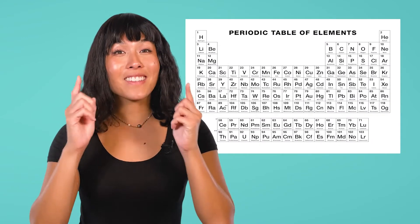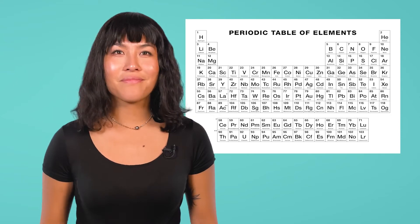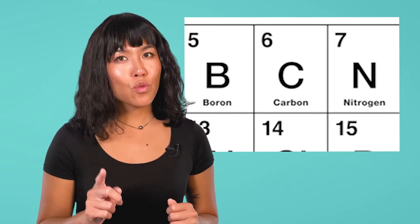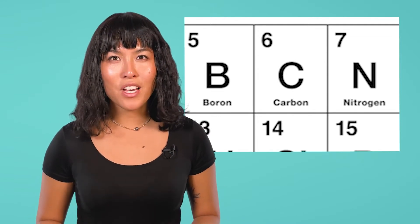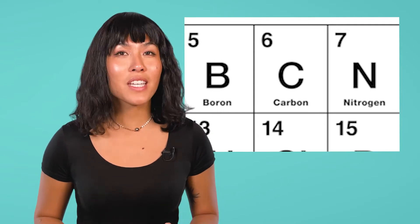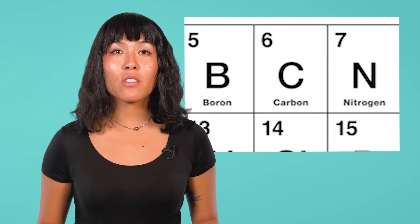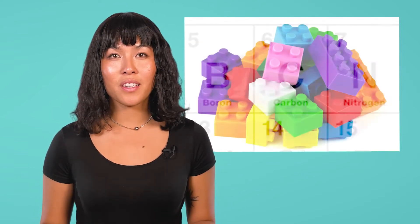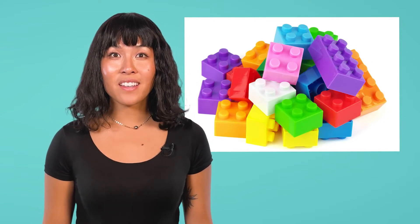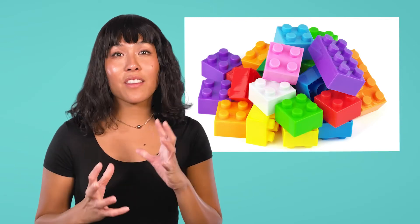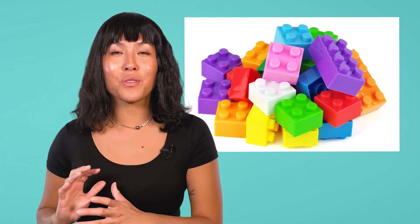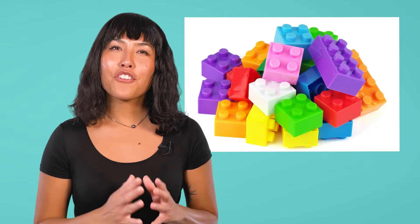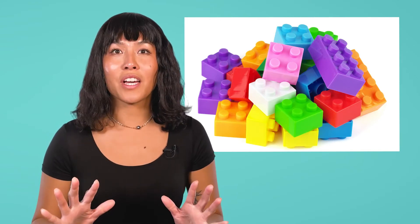First things first — what is carbon? Carbon is an element, so we can find it on the periodic table. There it is, number six. All carbon atoms have six protons in their nuclei. Carbon atoms are the building blocks of many different molecules. Remember our Lego analogy for molecules and chemical reactions? Atoms are like Legos that can be stuck together to form a wide variety of molecules.